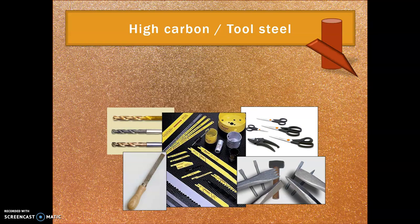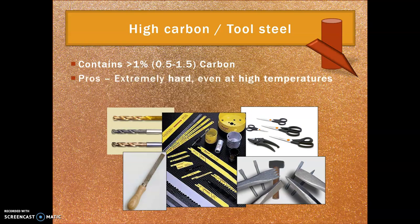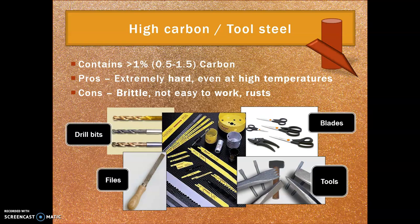Next we have high carbon or tool steel. It tends to come in a tube-like format or as a blade. It contains just above one percent — about one and a half percent — carbon. It is extremely hard even at high temperatures, however it can become brittle so it's not easy to work, and it rusts. When we talk about high temperatures we're talking about friction — drill bits, files, blades will get really hot due to friction, but tool steel is so hard it resists that. Work it enough though and it will become brittle and may snap.